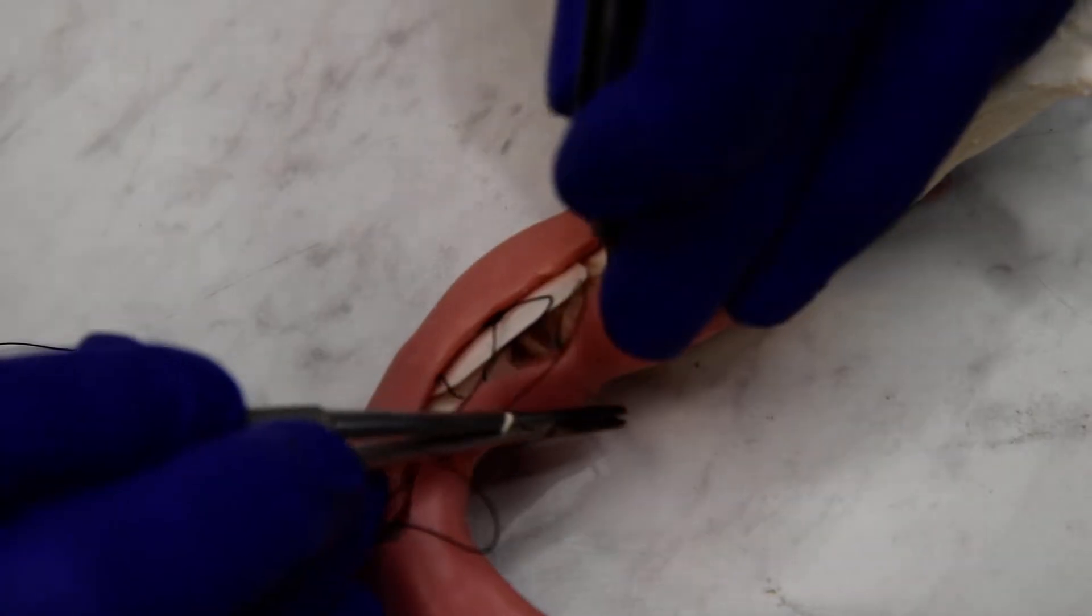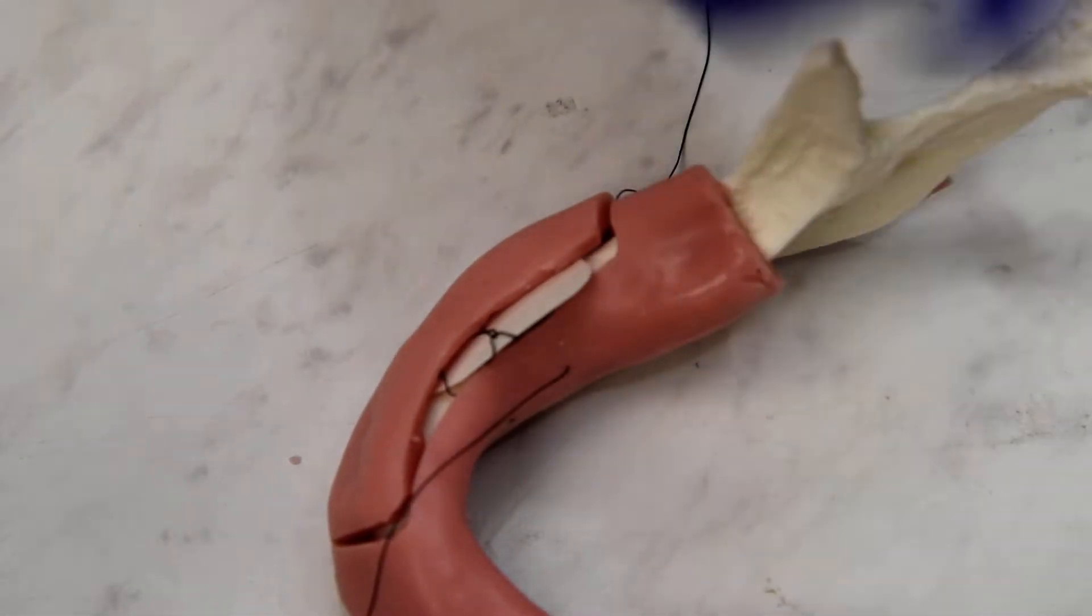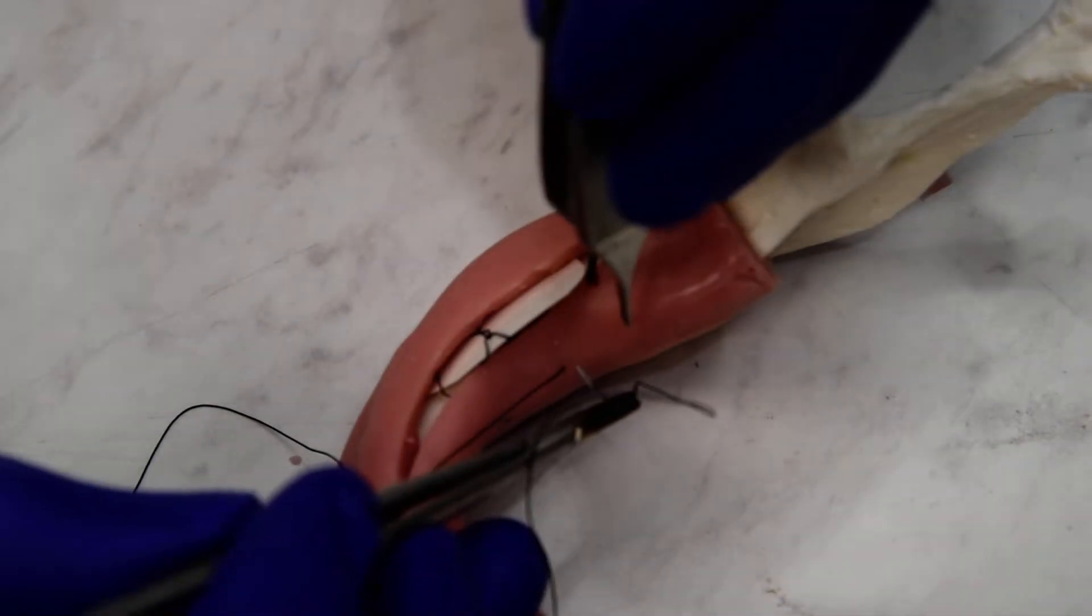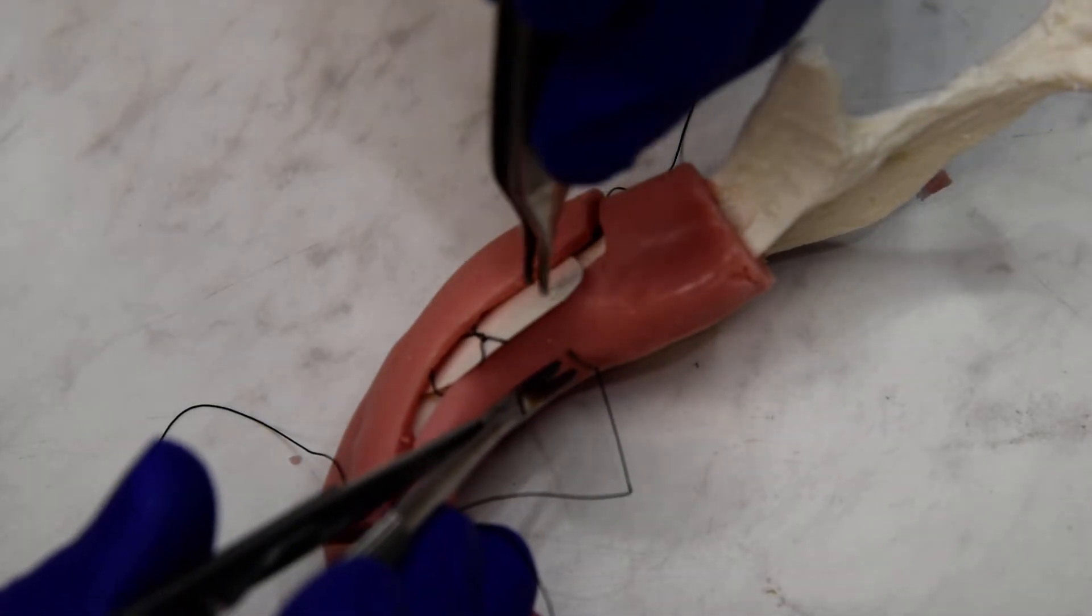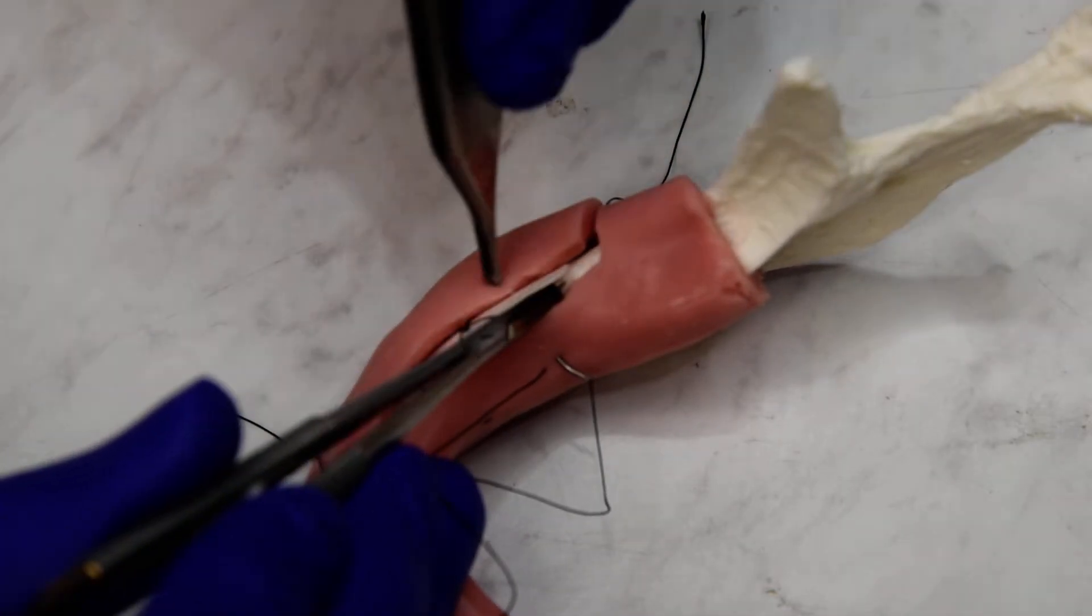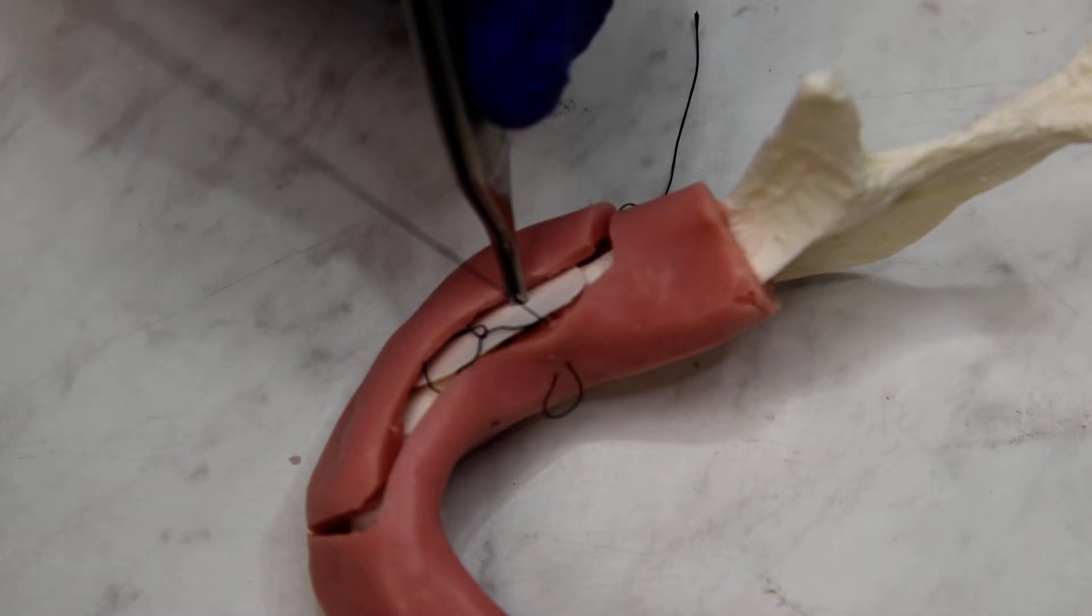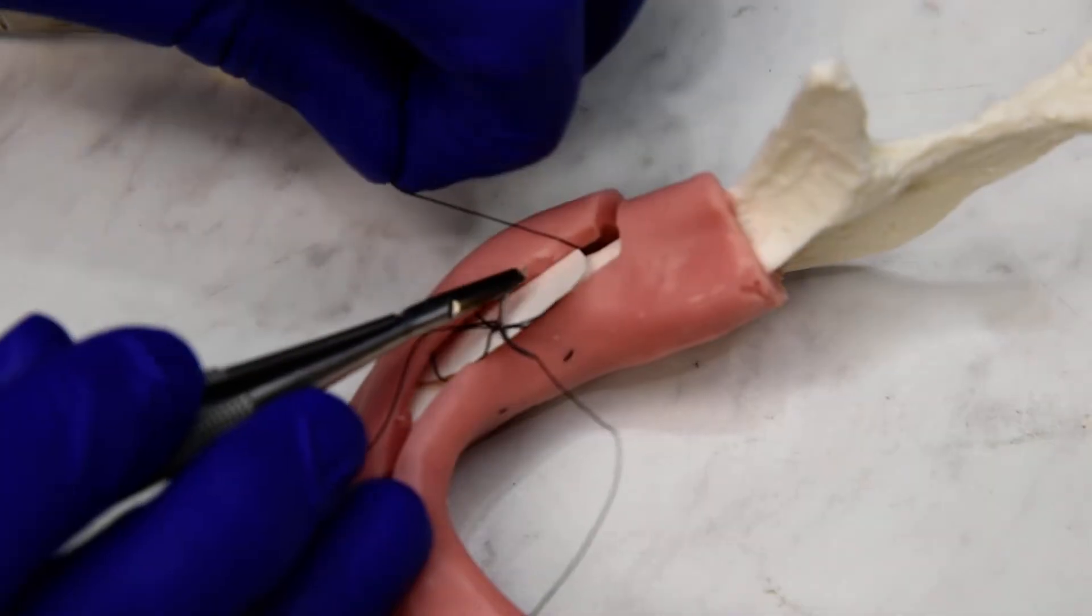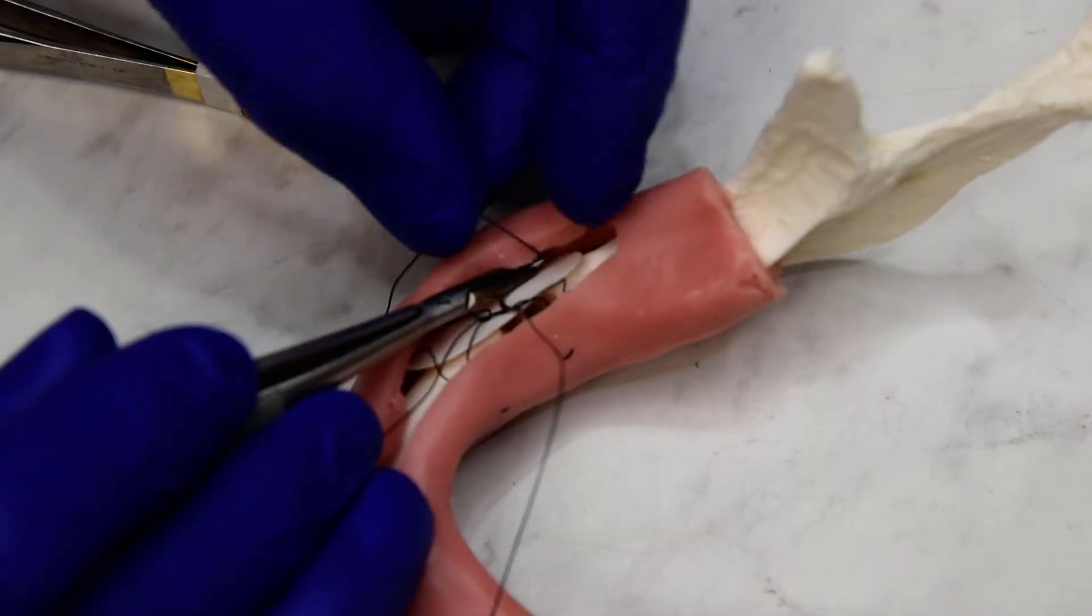So out the flap on the lingual, and back in. And then we're going to tie to our original tail from our first bite.